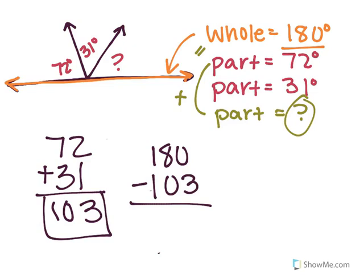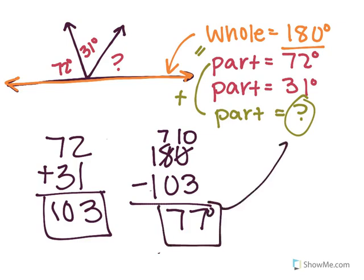Okay, so ungroup, this becomes a 7, so this can become a 10. 10 minus 3 is 7. 7 minus 0 is 7. 1 minus 1 is 0. So I found the missing degrees is 77 degrees.